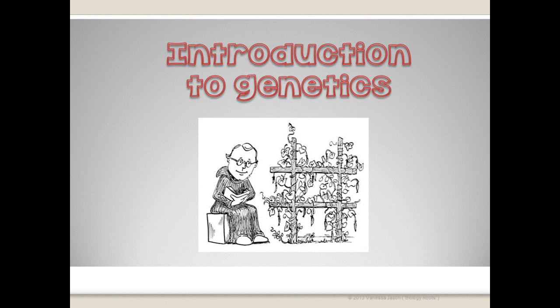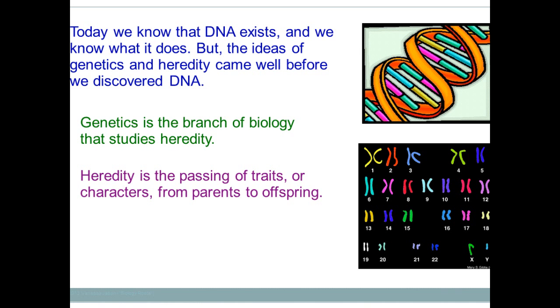We're going to talk about an introduction to genetics — how it came about, who discovered it, what his experiment was. The title for this set of notes is Mendelian Genetics, named after the famous scientist Gregor Mendel. Gregor Mendel was an Austrian monk, born in 1822, whose parents were peasants with a background in agriculture. He was an expert botanist at the monastery — the person who grew all the food — and he is called the father of genetics because he was one of the first people to study patterns of inheritance.